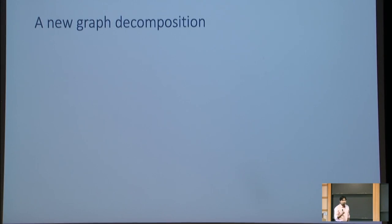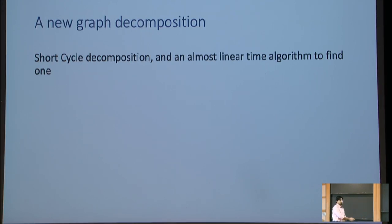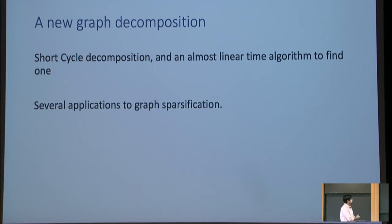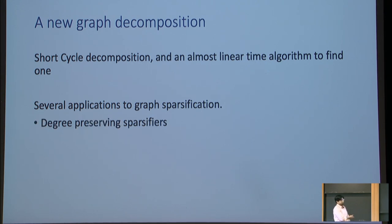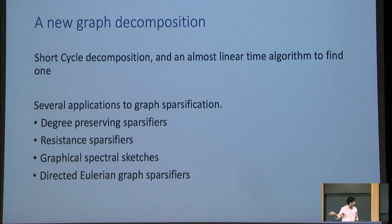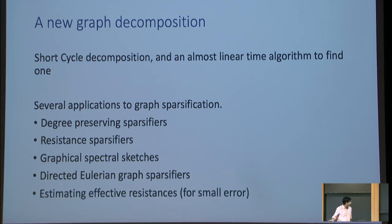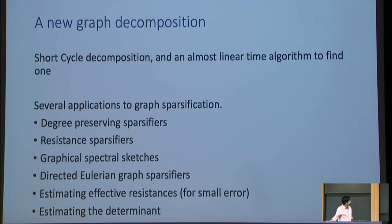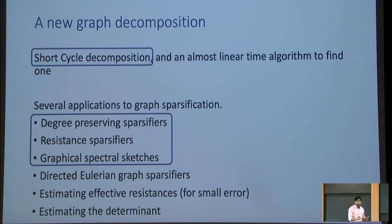This talk will be about a new graph decomposition called a short cycle decomposition. I'll also tell you about an almost linear time algorithm to find one. We'll see several applications to graph sparsification: degree-preserving sparsifiers, resistance sparsifiers, spectral sketches, Eulerian graph sparsification, effective resistances, and determinants. Given the time, I'll focus on the decomposition, how to construct it, and some simple applications.